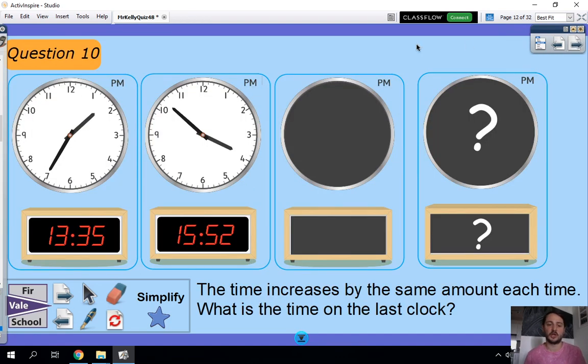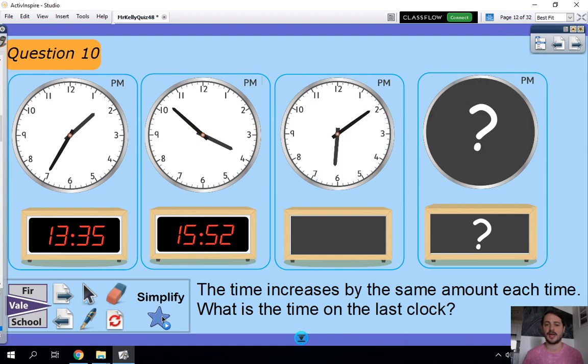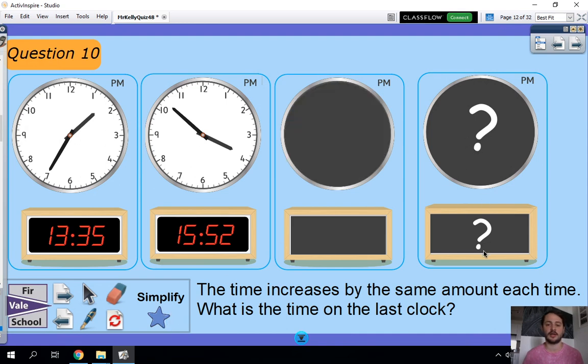Question ten. So we've got some clocks here. We've got some analogue clocks and we've got some digital clocks. And at the bottom it says that the time increases by the same amount as we go across each time. What is the time on the last clock? So we've got this time, then this time, and it's increased by a certain amount of time. It's then going to increase by a certain amount of time again. And then it's going to increase again by that same amount of time. I'm going to very quickly give you this hint. It might make things a little bit easier. But that's what the time looks like there in the third one. But I'm going to remove that. I'm not going to make it too easy. So you need to try and say what the time is on the last clock. You only need to give me the digital time on the last clock.